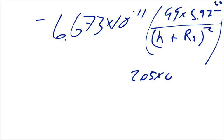so the height was 2.05 times 10 to the 6th meters, so you've got to add that to the radius of the Earth, which the radius of the Earth is 6,371,000 meters, or about 6,371 kilometers.